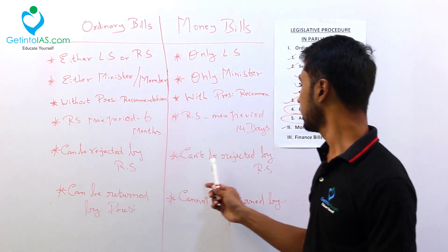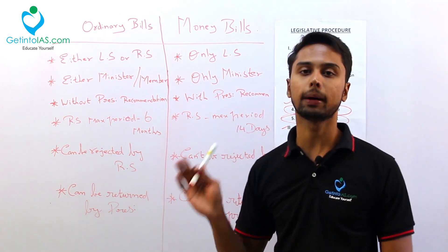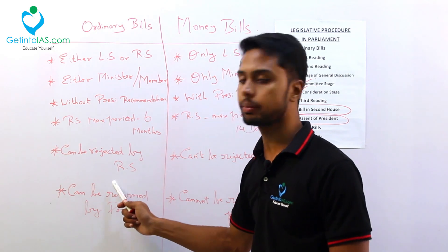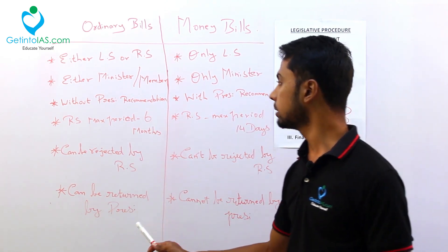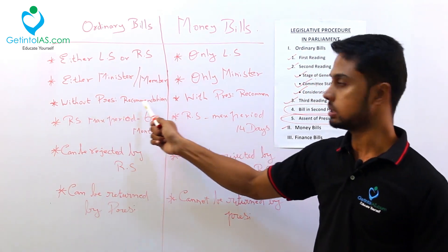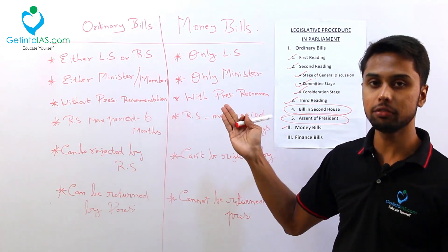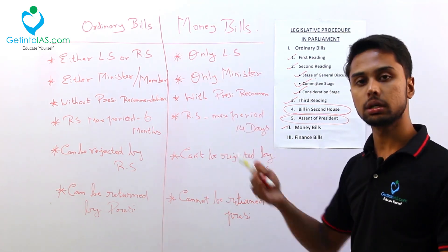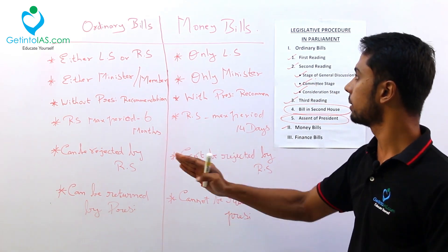Ordinary bill can be rejected by Rajya Sabha, but money bill cannot be rejected by Rajya Sabha since Rajya Sabha has no power over it. Ordinary bill can be returned by the President, but money bill cannot be returned by the President. For an ordinary bill, since it is introduced without the president's recommendation, he can return it. But for the money bill, it is already introduced with the prior permission of the president, so the president cannot return the money bill. There is no provision for returning the money bill.